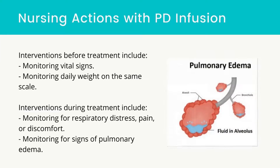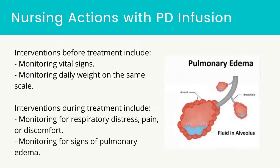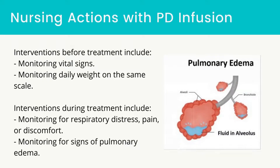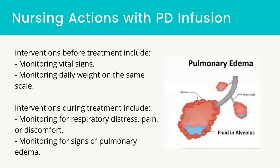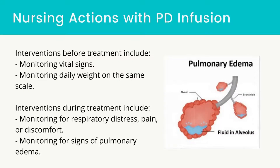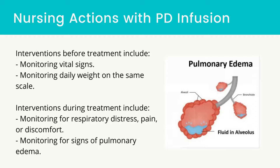Nursing actions with PD infusion — interventions before treatment include: monitoring vital signs, monitoring daily weight on the same scale, having the patient void if possible, assessing electrolyte and glucose levels, and assessing the peritoneal catheter, dressing, and site.